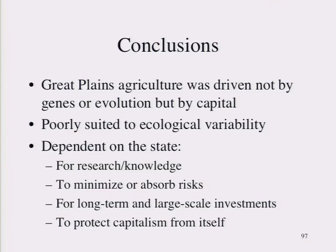This is a general theory about the state and its relationship to the environment. Some conclusions about Worcester's book and the Dust Bowl: Great Plains agriculture was driven not by genes, evolution, or some nebulous category of culture, but by capital — the investments in railroads, farms, tractors, and other systems necessary to make it profitable to grow crops in the Southern Great Plains. It was a profit-seeking system of enormous power, poorly suited to the variability it encountered in the Southern Great Plains, and that created a crisis. It was dependent on the state for research, information, and knowledge about soils, crops, and climates — and for minimizing and absorbing risks and losses.